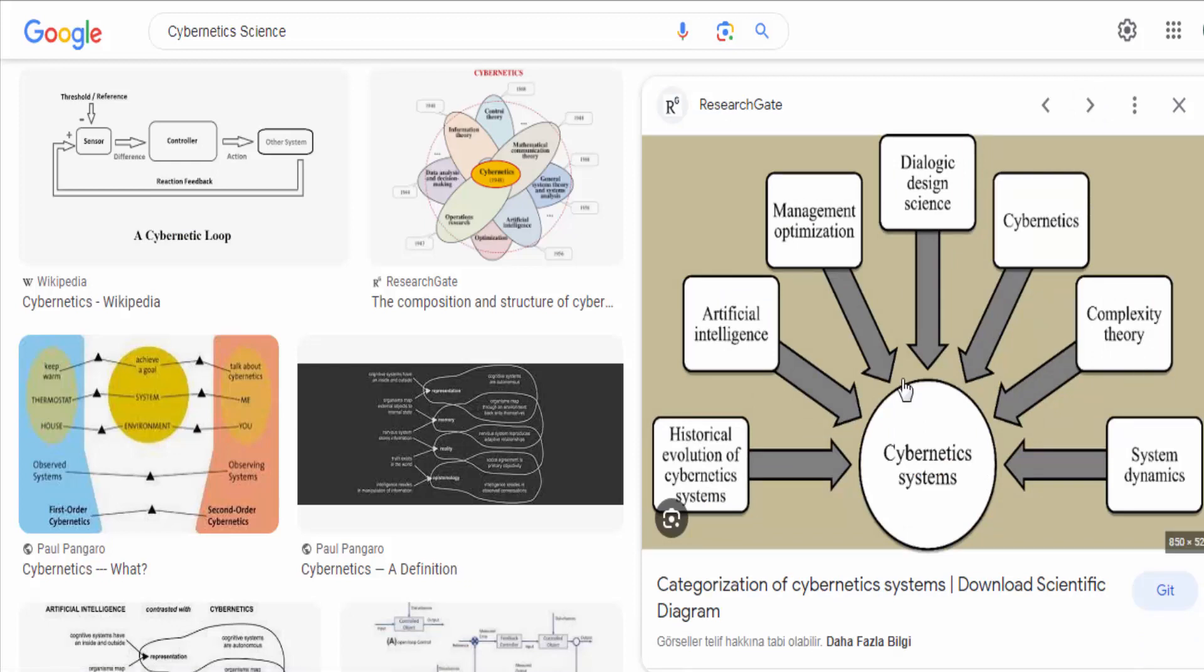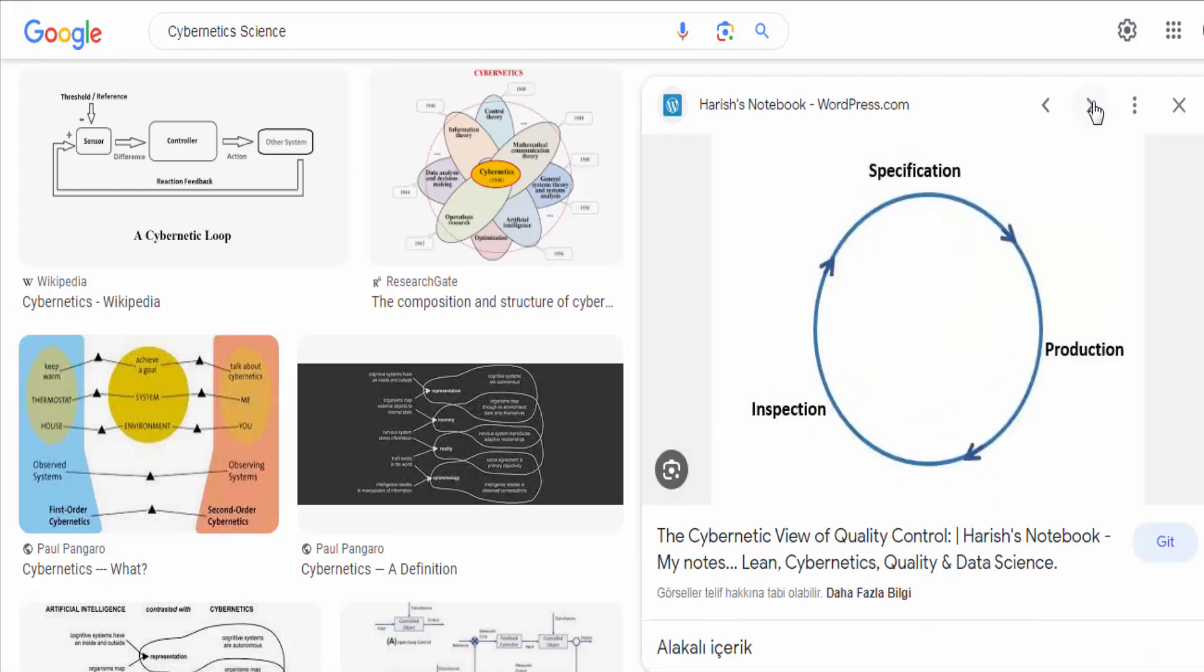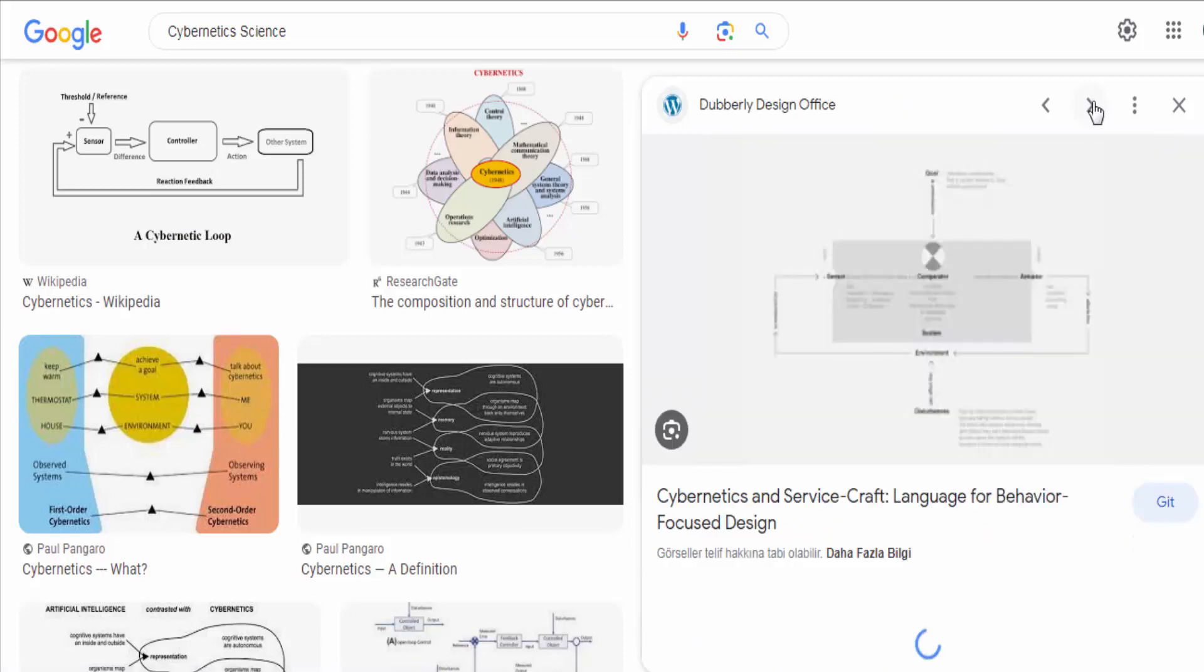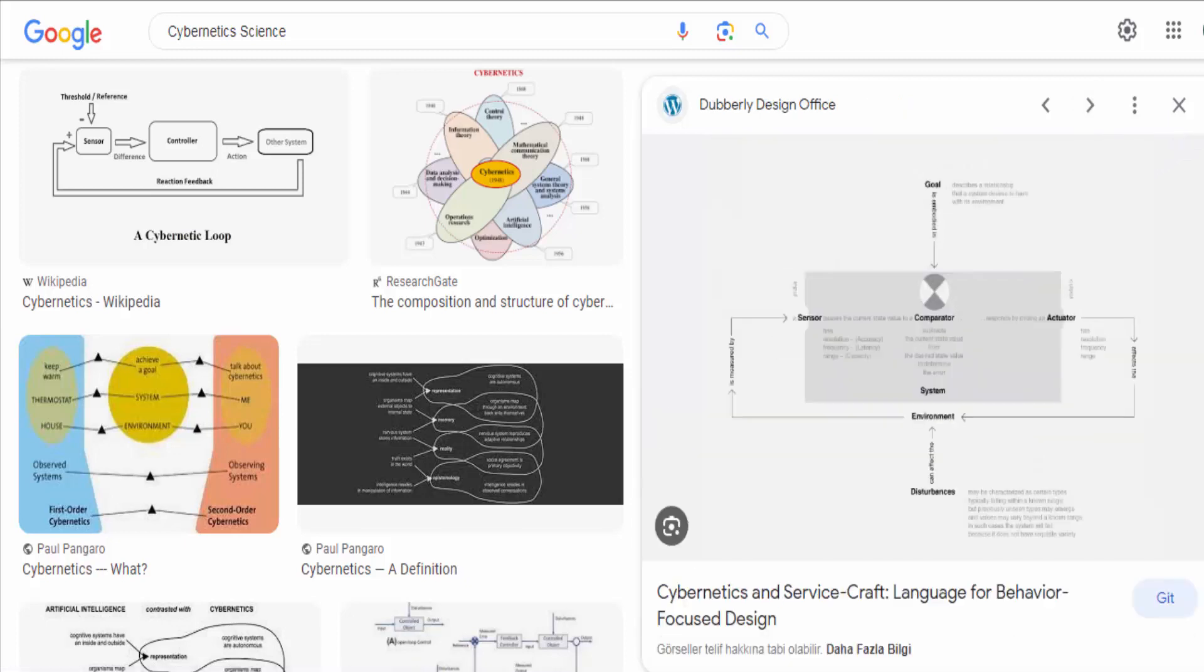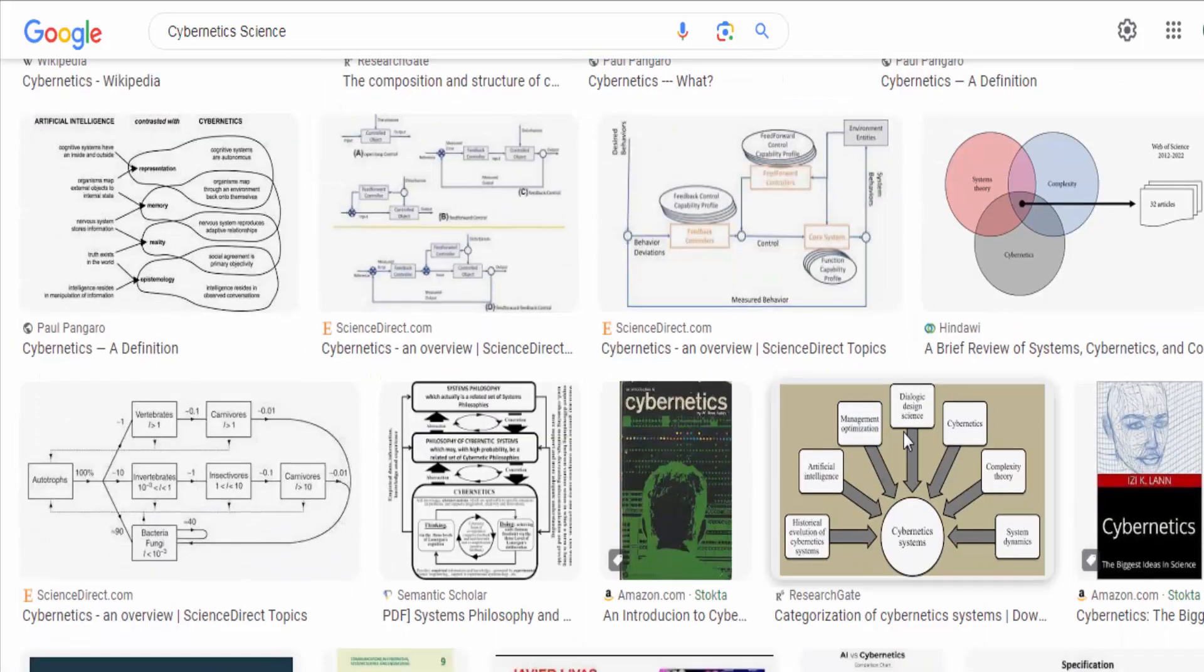Key concepts in cybernetics include feedback. Cybernetics systems rely on feedback loops, where information about the system's output is fed back to modify its future behavior. Feedback is essential for self-regulation and maintaining stability.